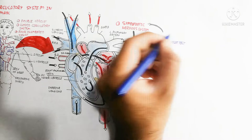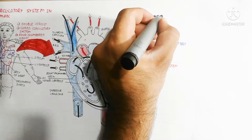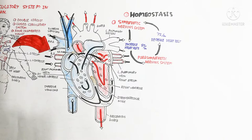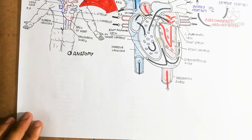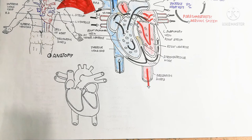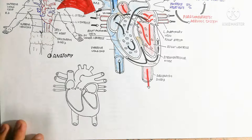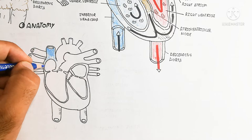Now let's begin to understand the major anatomical structures of the heart. I am drawing the heart diagram again to understand heart anatomy. The heart contains different types of tissue. The heart contains pulmonary veins and pulmonary arteries — the pulmonary artery carries deoxygenated blood toward the lungs, while the pulmonary vein carries oxygenated blood toward the heart.